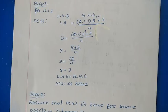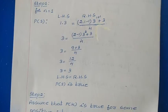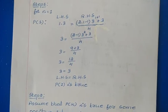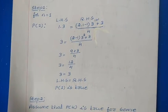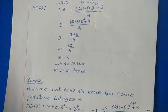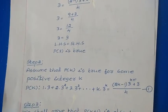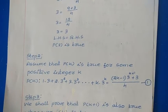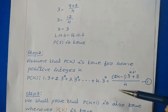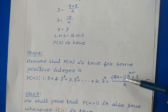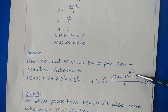Next, the second step: we make the assumption. We take some positive integer K and assume the given statement is true for that integer. Wherever we have N, we replace it with K. So we get P(K): 1×3 + 2×3² + 3×3³ + ... + K×3^K = (2K−1)×3^(K+1) + 3, divided by 4.